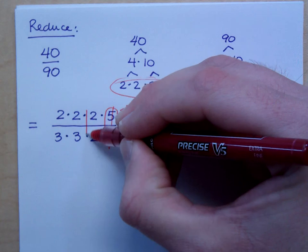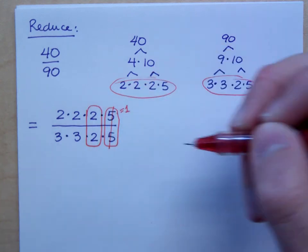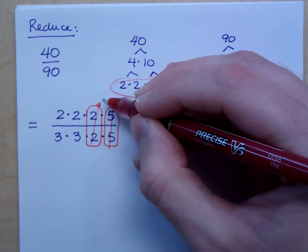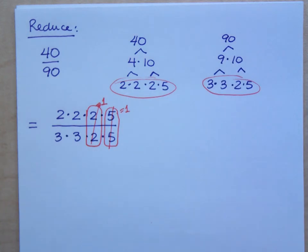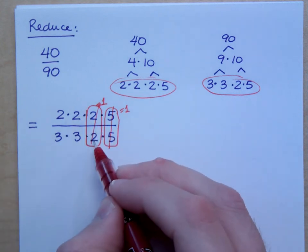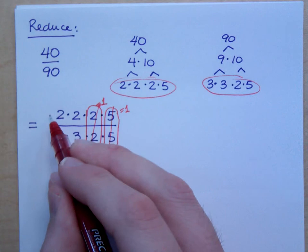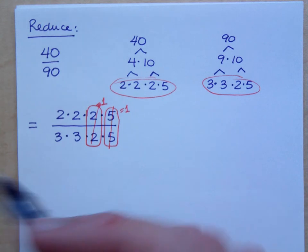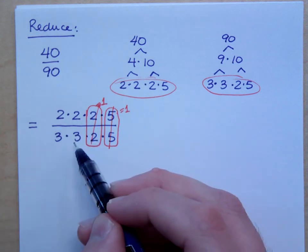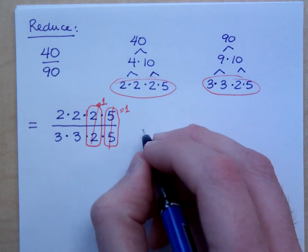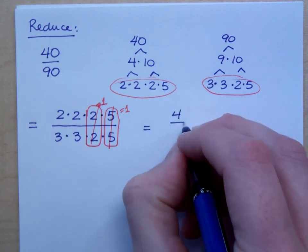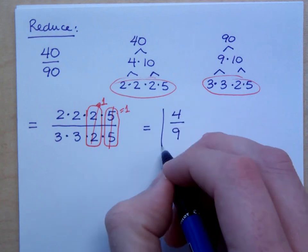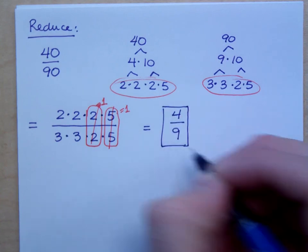Look here, you also have 2 over 2. What's 2 divided by 2? This is also a factor of 1. Now notice, when you reduce these, you reduce it 1 to 1. You can't use this 2 down here to cancel with all of the 2s up top. It's a 1 to 1 relationship. Can I reduce the 2 with the 3? No. So then what we're left with is 2 times 2, which is 4, over 3 times 3, which is 9. And that's what we have.